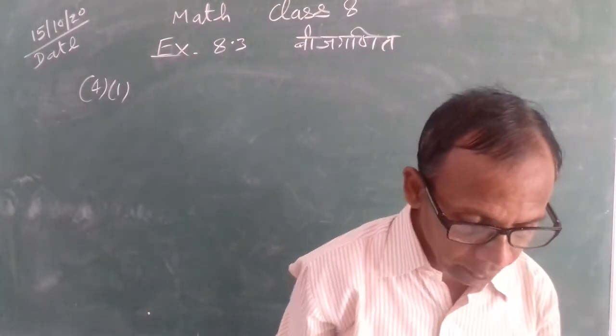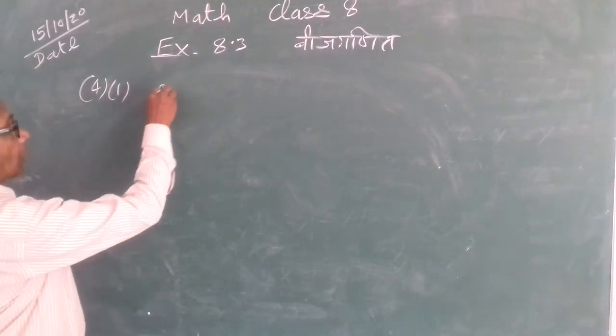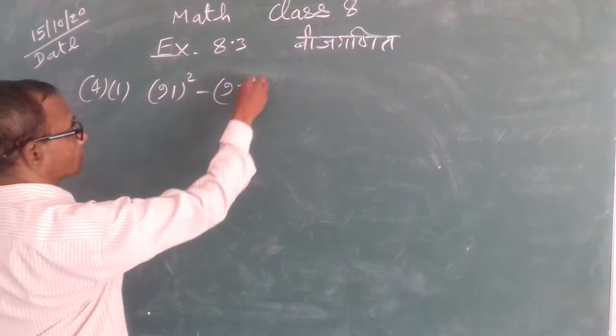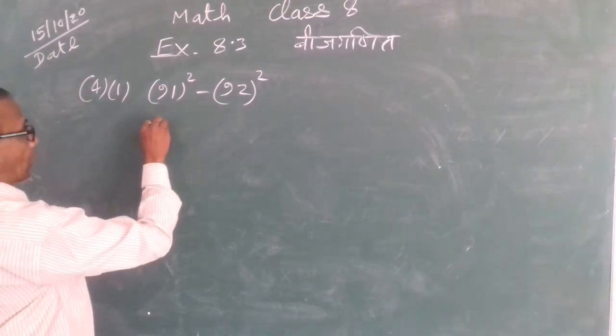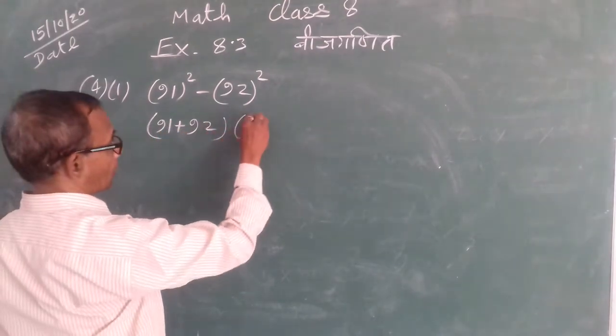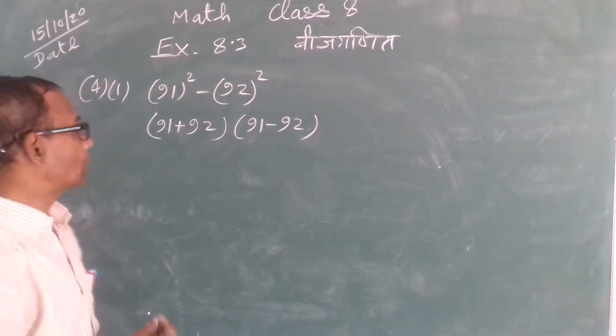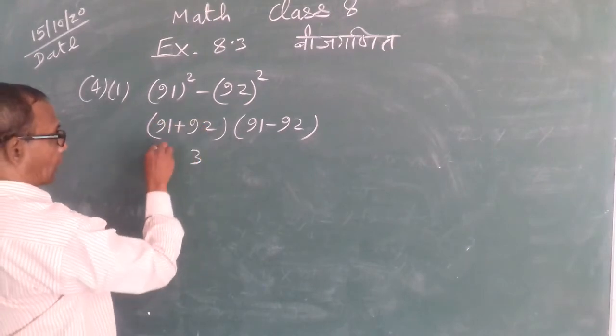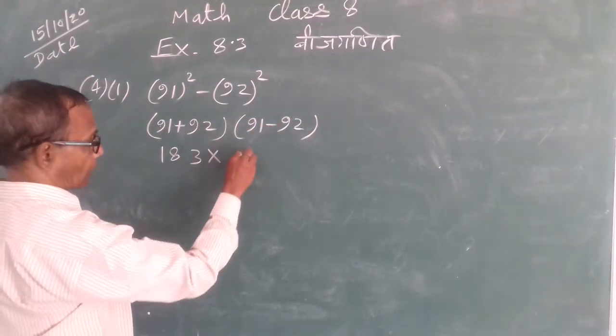Part (i): 91² - 82². We can write this as a² - b², which equals (a + b)(a - b). So 91 + 82 times 91 minus 82, which is 18 × minus 1.